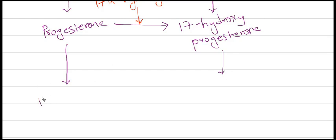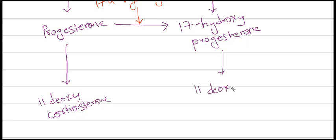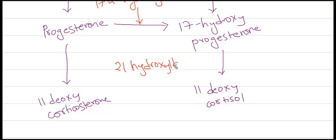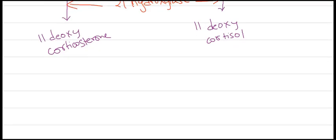Progesterone is converted into 11-deoxycorticosterone, while 17-hydroxyprogesterone is converted into 11-deoxycortisol. Both of these reactions are catalyzed by 21-hydroxylase, which is the most important enzyme in this pathway — its deficiency causes congenital adrenal hyperplasia.